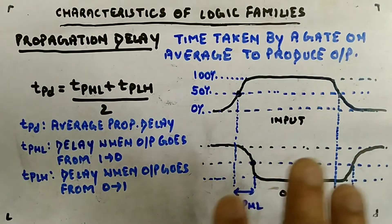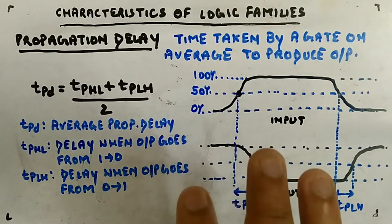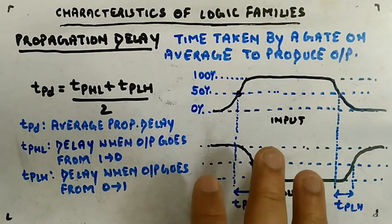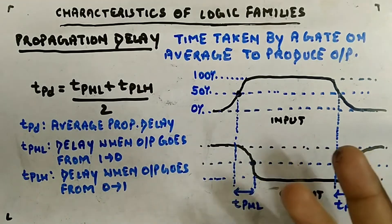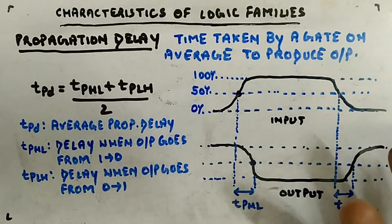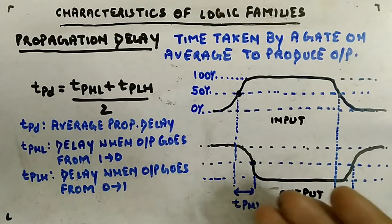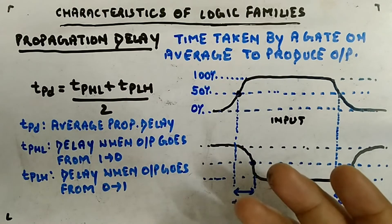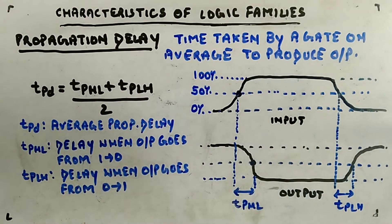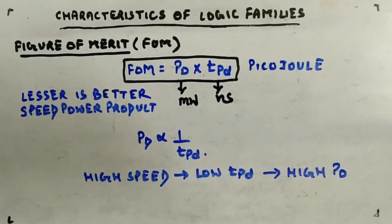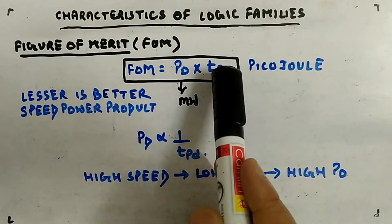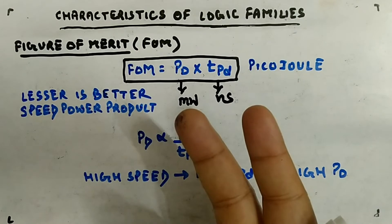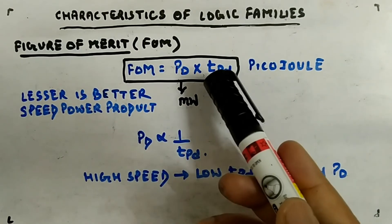To summarize so far: lesser propagation delay is better, lesser power dissipation is better, fan-in depends on application, and fan-out — more is better. Now let's look at the next characteristic: Figure of Merit (FOM), which is the product of propagation delay and power dissipation, also called speed-power product.